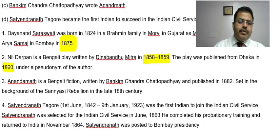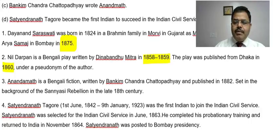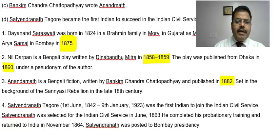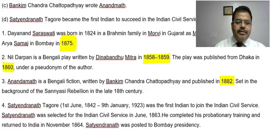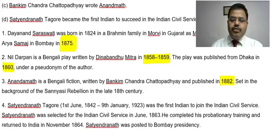Anand Math is a Bengali fiction written by Bankim Chandra Chattopadhyay and published in 1882. Satyendranath Tagore lived from June 1842 to January 1923, and he was the first Indian to join the Indian Civil Services, selected in 1863.